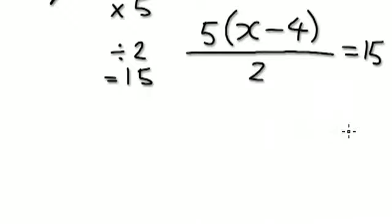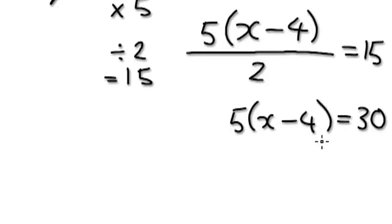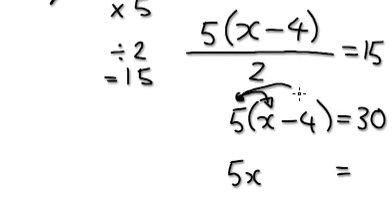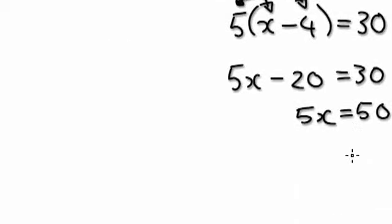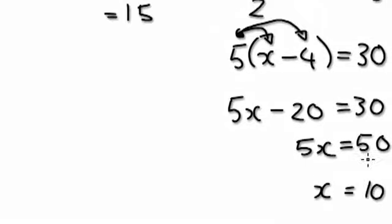Now it's just a matter of solving this. Multiply both sides by 2, so this gives 30 equals 5 times bracket (x minus 4). Multiply this out: 5 times x is 5x, and 5 times 4 is 20, giving 5x minus 20 equals 30. Add 20 to both sides, then divide both sides by 5, so x equals 10. The number I was thinking of was 10.